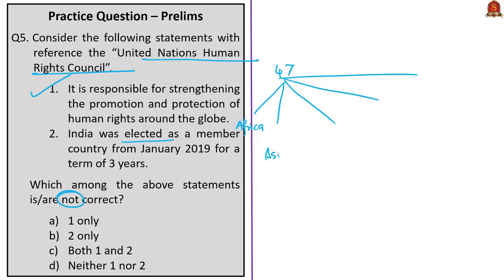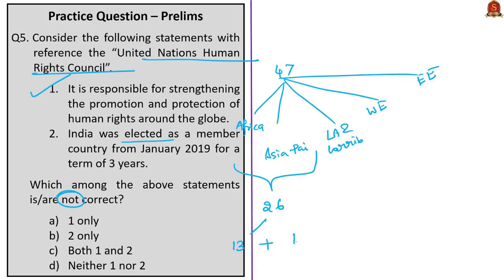The five areas are: African states, Asia-Pacific states, Latin American and Caribbean states, Western European and other states, and Eastern European states. African states and Asia-Pacific states get 13 seats each (totaling 26); 8 seats for Latin American and Caribbean; 7 for Western European and others; 6 for Eastern European states. India was elected in October 2018. Both statements are correct, so the correct answer is option D: neither one nor two.